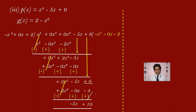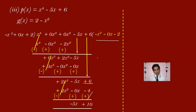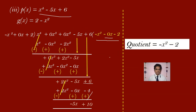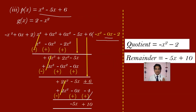This is the end of the division. The divisor's degree is 2 and the remainder's degree is 1, so the division has come to an end. The quotient is minus x square minus 0x minus 2, which you can write as minus x square minus 2. The remainder is minus 5x plus 10.